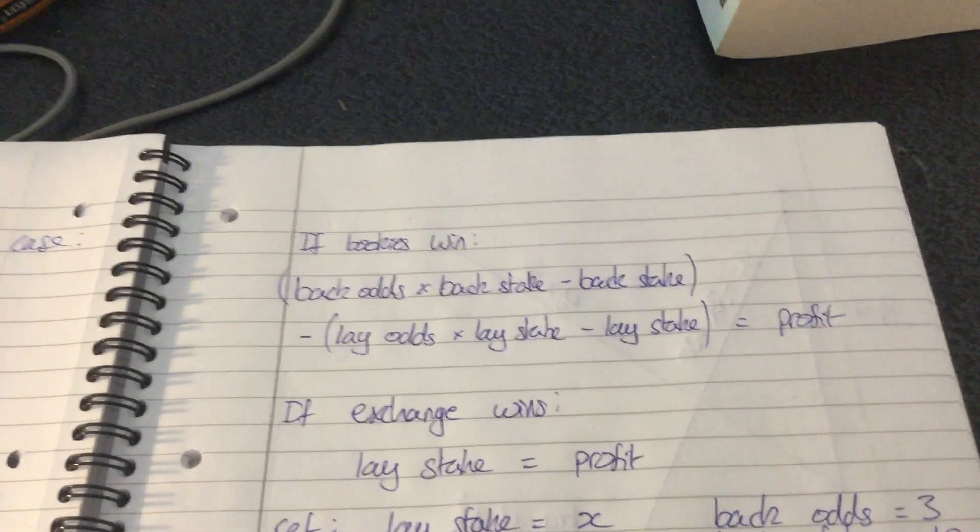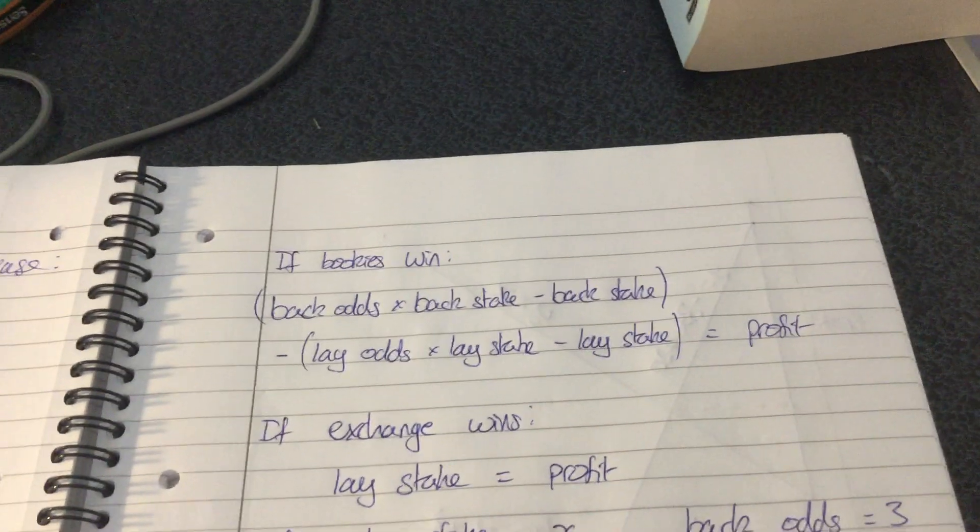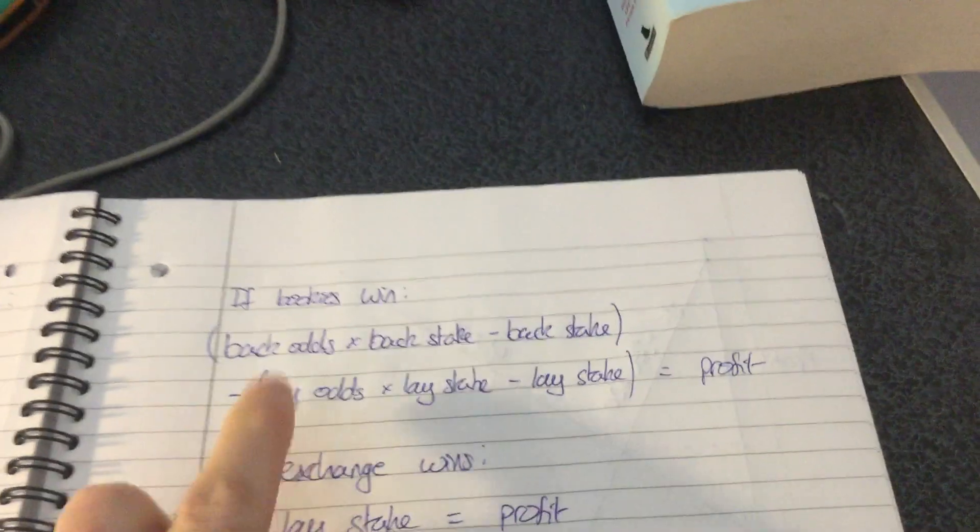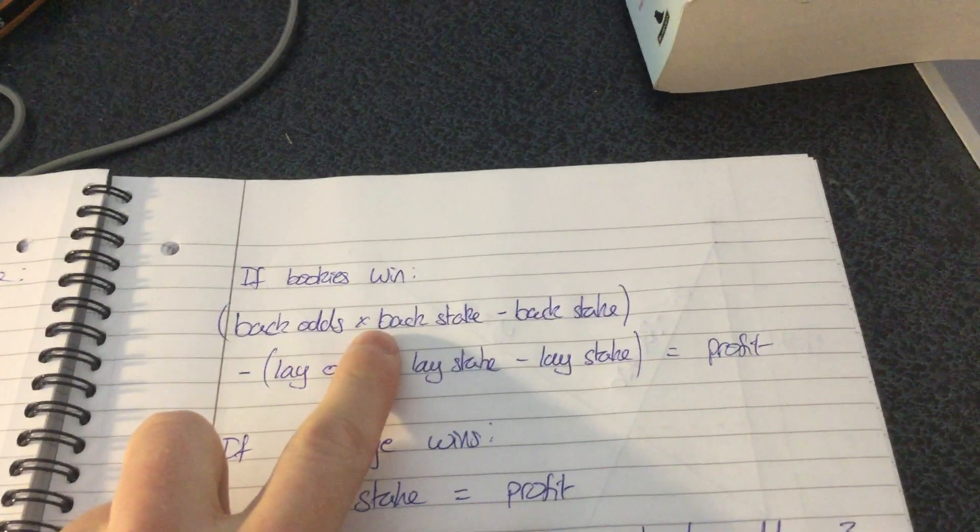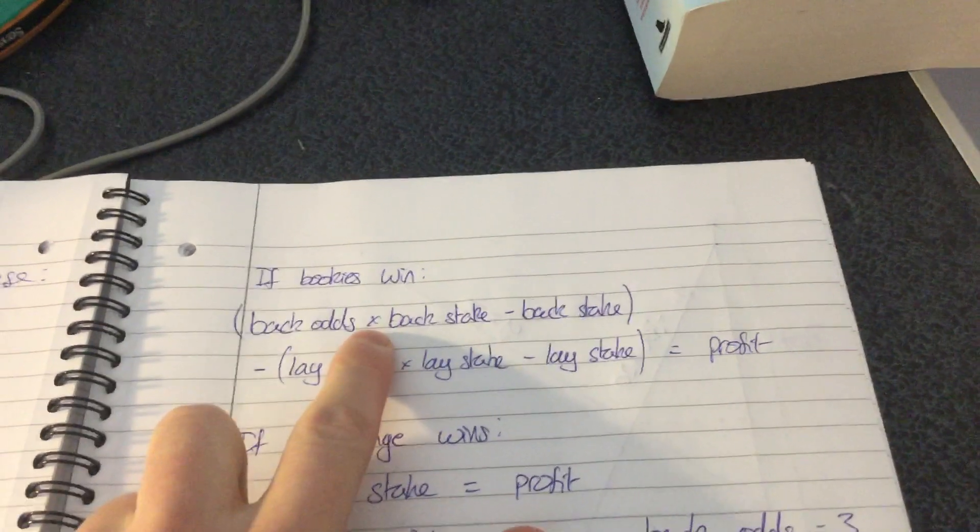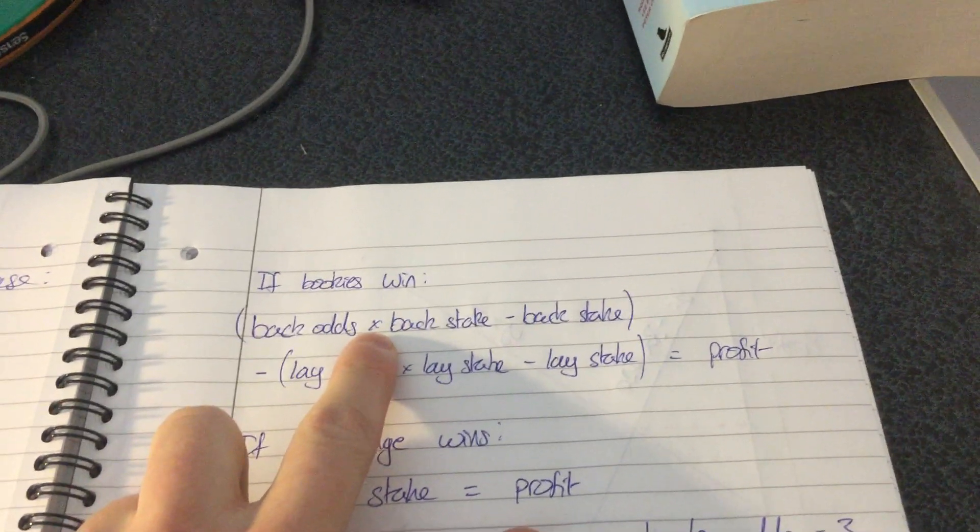If we're assuming that the bookies win, then to calculate our profit we've got the back odds multiplied by the back stake, and what that gives you is the total returns on your bet.